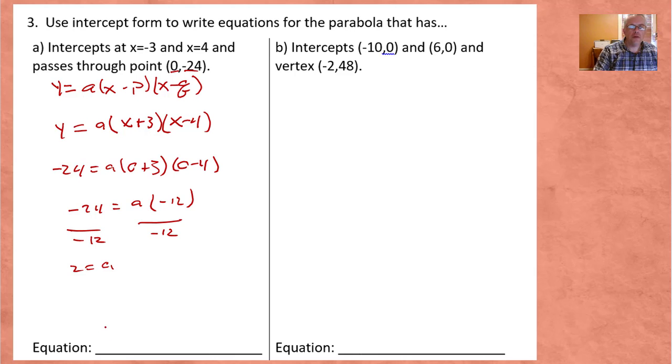So let's write it. We're going to go back and put 2 in right there. So we have Y equals 2 X plus 3 X minus 4. I feel you understand it already, but one last example here. So intercepts at negative 2, 0 and 6, 0 and vertex negative 2, 48. So that's the point we're going to use.